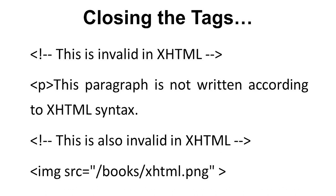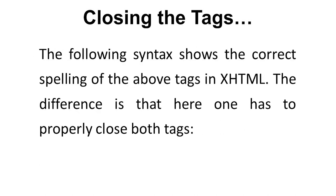The paragraph tag p is also invalid XHTML if not properly closed. Similarly, an image tag with src equals books-html.png that is not closed is invalid. Both paragraph and image tags that are not closed are invalid in XHTML. The correct XHTML syntax requires that both tags be properly closed.